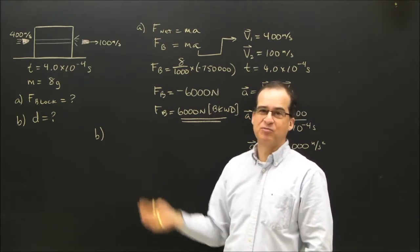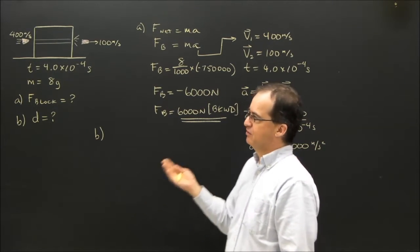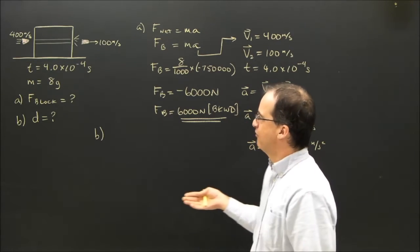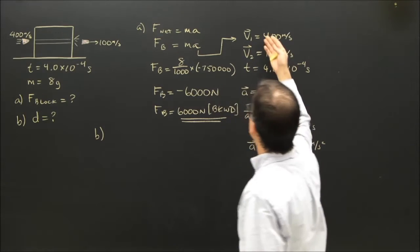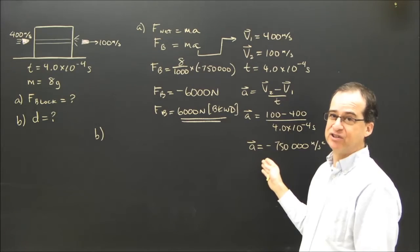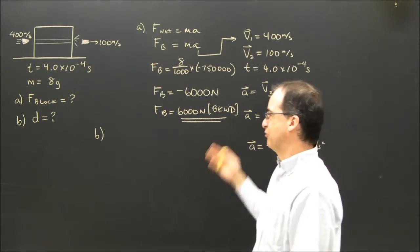Because D is one of my kinematics variables. It's not in my F net equals M Newton second law formula. So really, it's just, well, what numbers do I have in the kinematics? I've got V1, V2, T, so I can find D. But I also have the acceleration. So I have a choice of some different formulas.